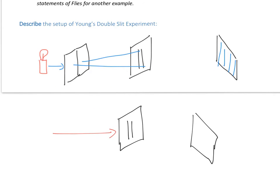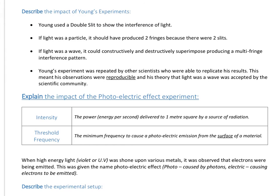So that is the setup for Thomas Young's experiment. Let's have a quick talk about the two different models. With a double slit, if light was a particle, it should in theory have produced two fringes of light - one for each slit. However, what you see is a fringe pattern indicating constructive and destructive interference, which indicates wave-like properties. Scientists had learned their lesson by this point and developed the scientific method as a community. Some scientists went out and tested what Thomas Young had done, were able to replicate his results, and that led to his theory that light had wave-like properties being accepted by the scientific community.